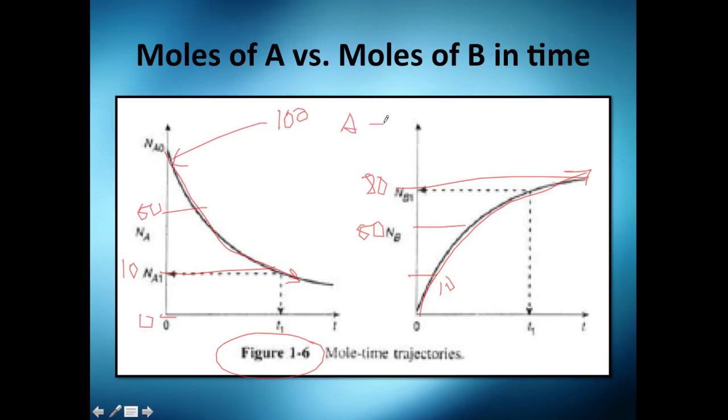So since it's 1 to 1, when you react 10 of A you're going to have 10 of B. So at the ending you get 90 of A and 10 of B.